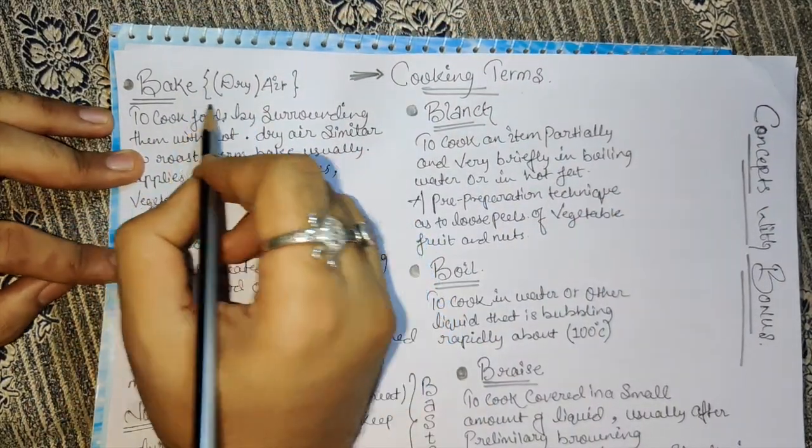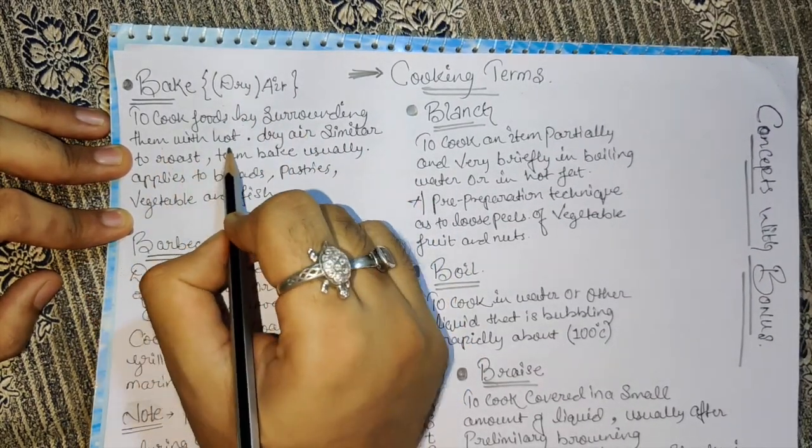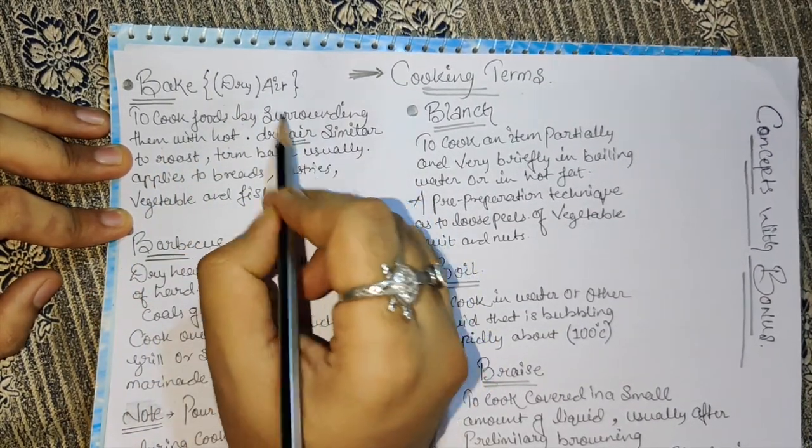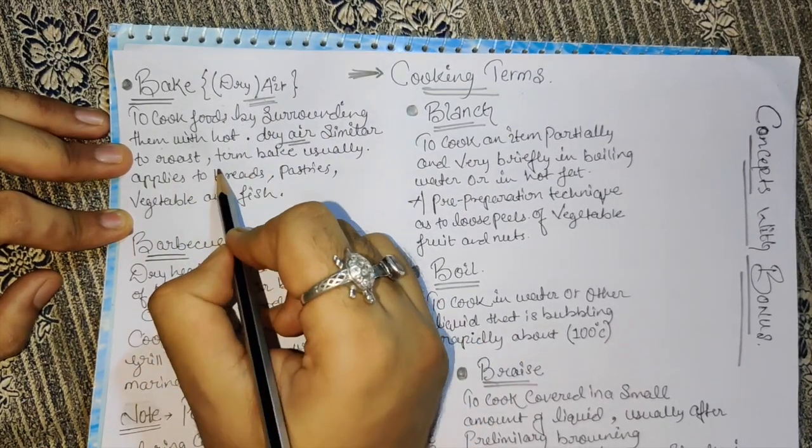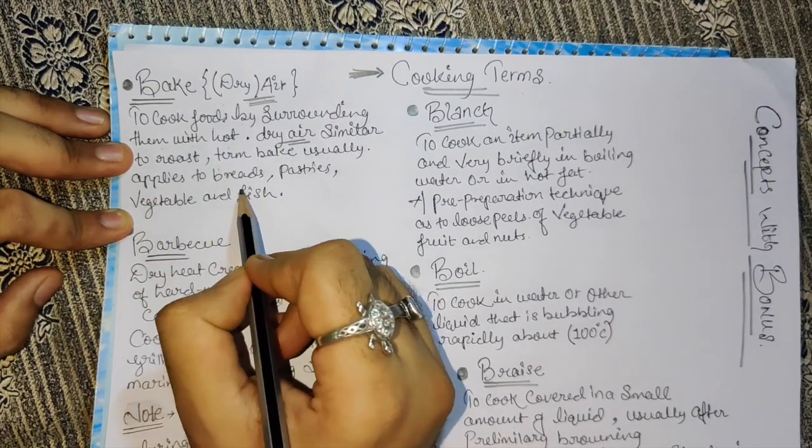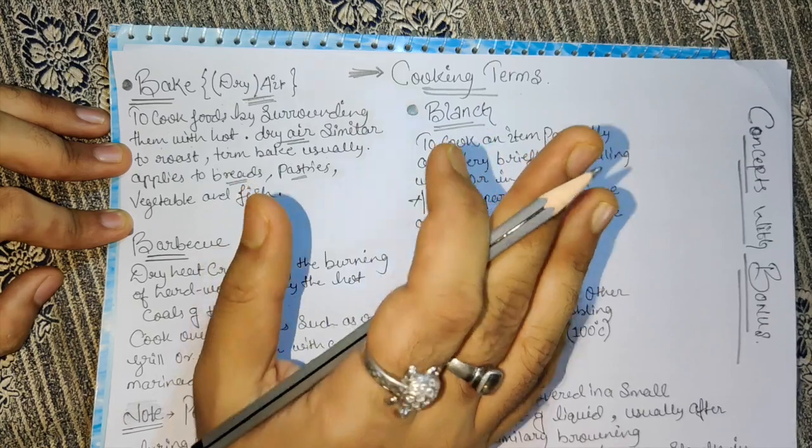The first is bake, which is dry air. To cook food by surrounding them with hot dry air, similar to roast. The term bake usually applies to bread, pastries, vegetables, and fish.